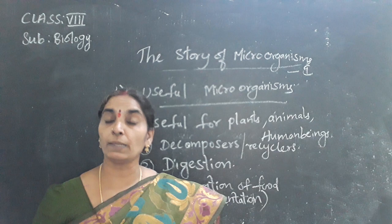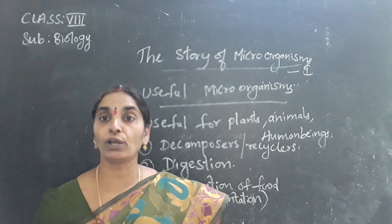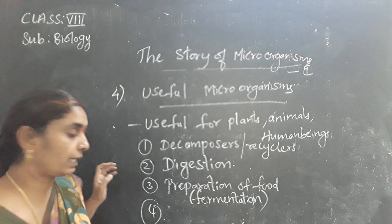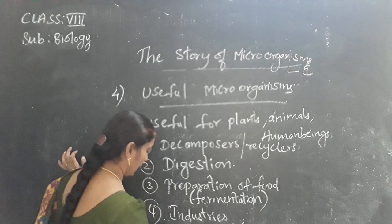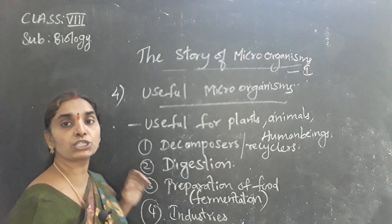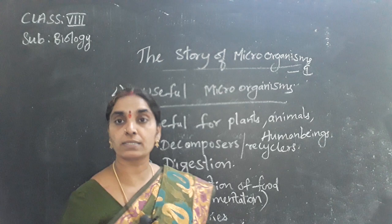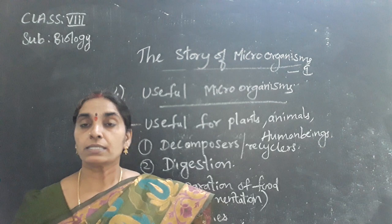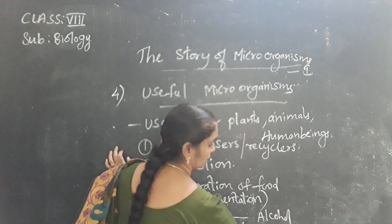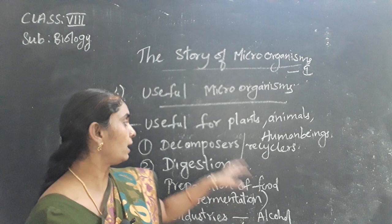They are also used in the preparation of alcohol and drugs. Many medicinal drugs are produced using micro-organisms — they are used in industries and bakeries. Micro-organisms also have medicinal value and are used in the preparation of vaccines. So we can say micro-organisms are useful in different ways for plants, animals, and human beings.